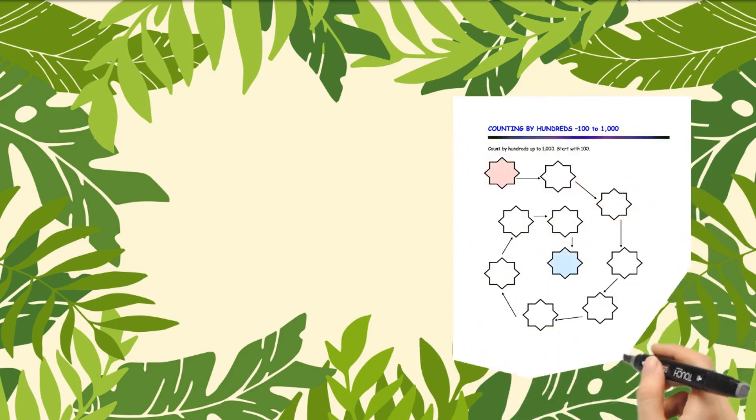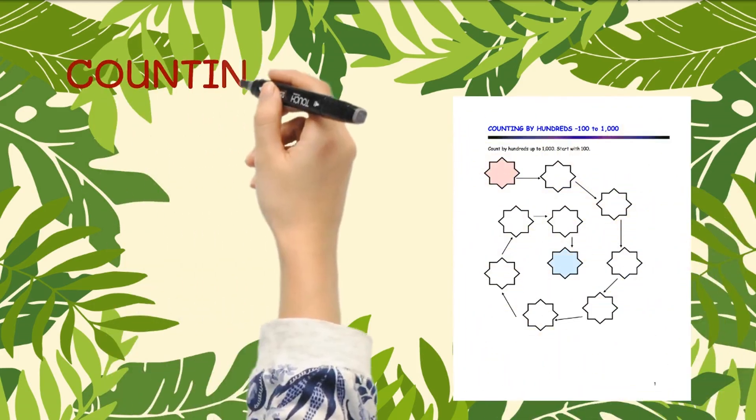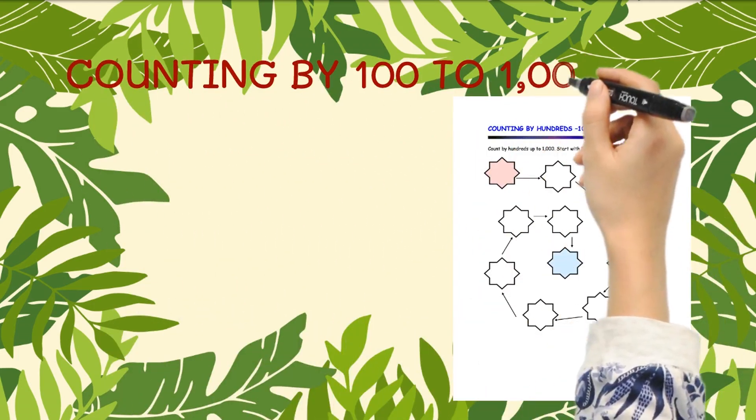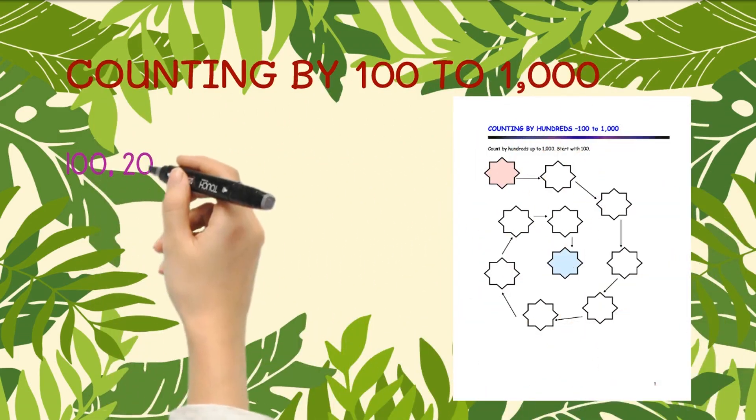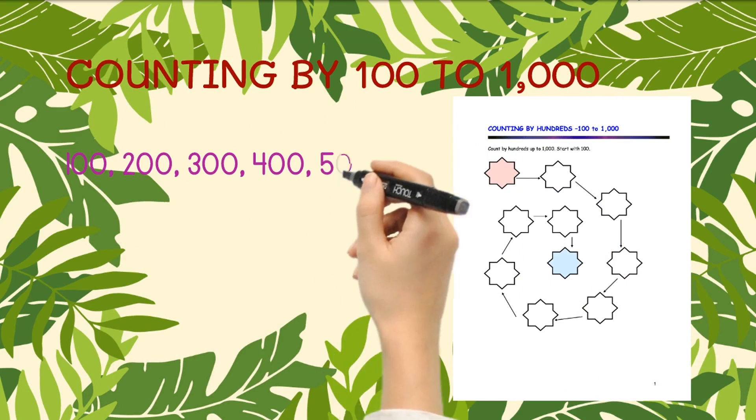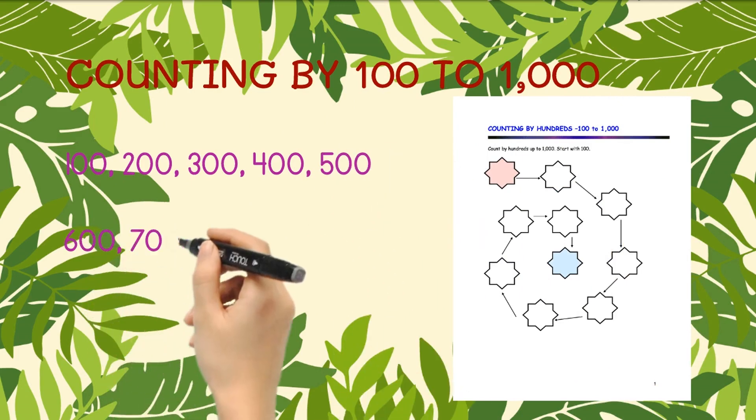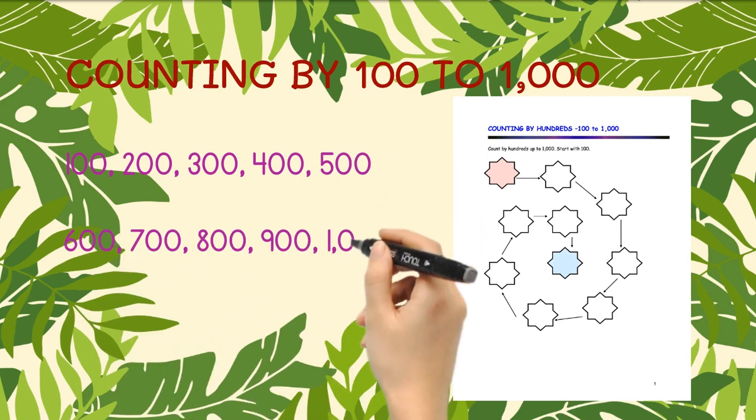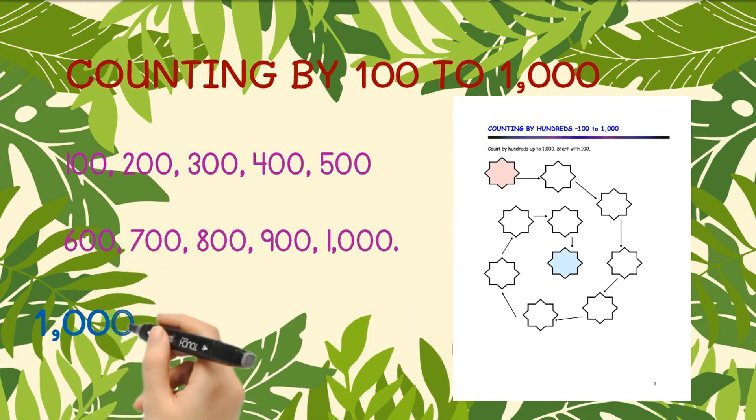Counting by 100 to 1000: 100, 200, 300, 400, 500, 600, 700, 800, 900, 1000.